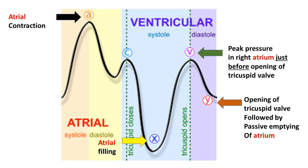This phase of atrial contraction is followed by a phase of atrial filling. The atrium gets filled progressively — 20%, 30%, 40% — up to a point where the atrium is full, which you can call the peak pressure in the atrium. After the peak filling of the atrium is reached, the tricuspid valve opens and the atrium empties into the right ventricle.